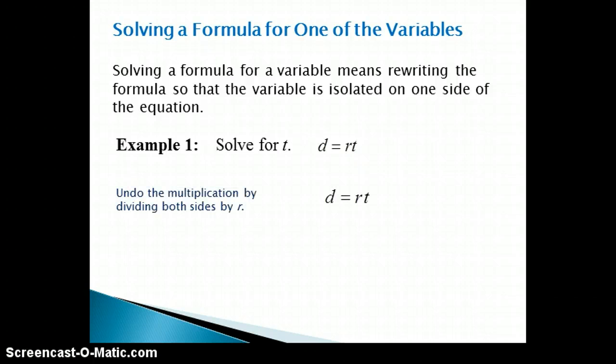Since T is being multiplied by R, we can undo this multiplication by dividing both sides by R. Simplifying both sides, we obtain our solution, which says that T is equal to D divided by R.